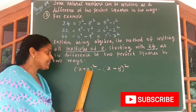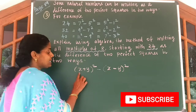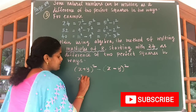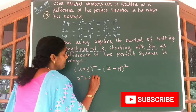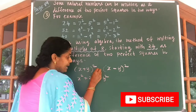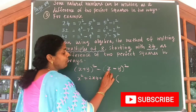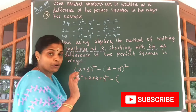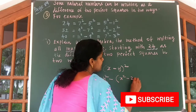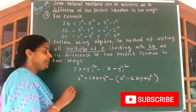Now let us expand x plus y whole square. We know x plus y whole square is equal to x square plus 2xy plus y square. Write this minus sign. Minus of x minus y whole square gives you x square minus 2xy plus y square.